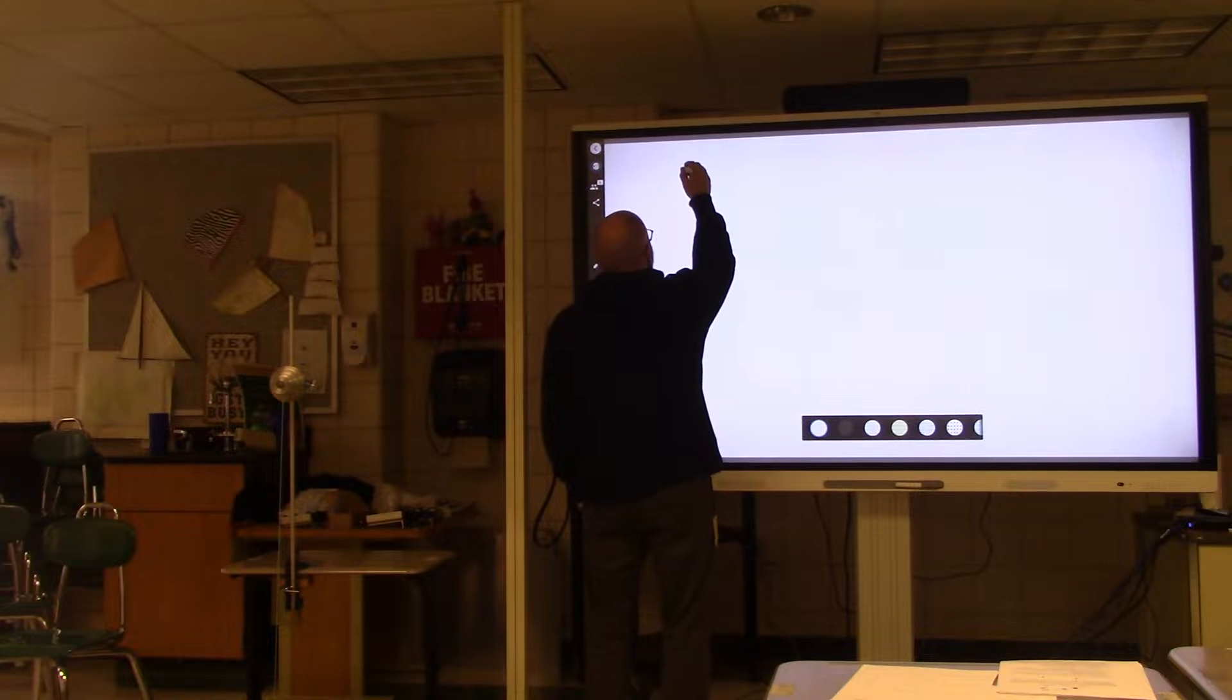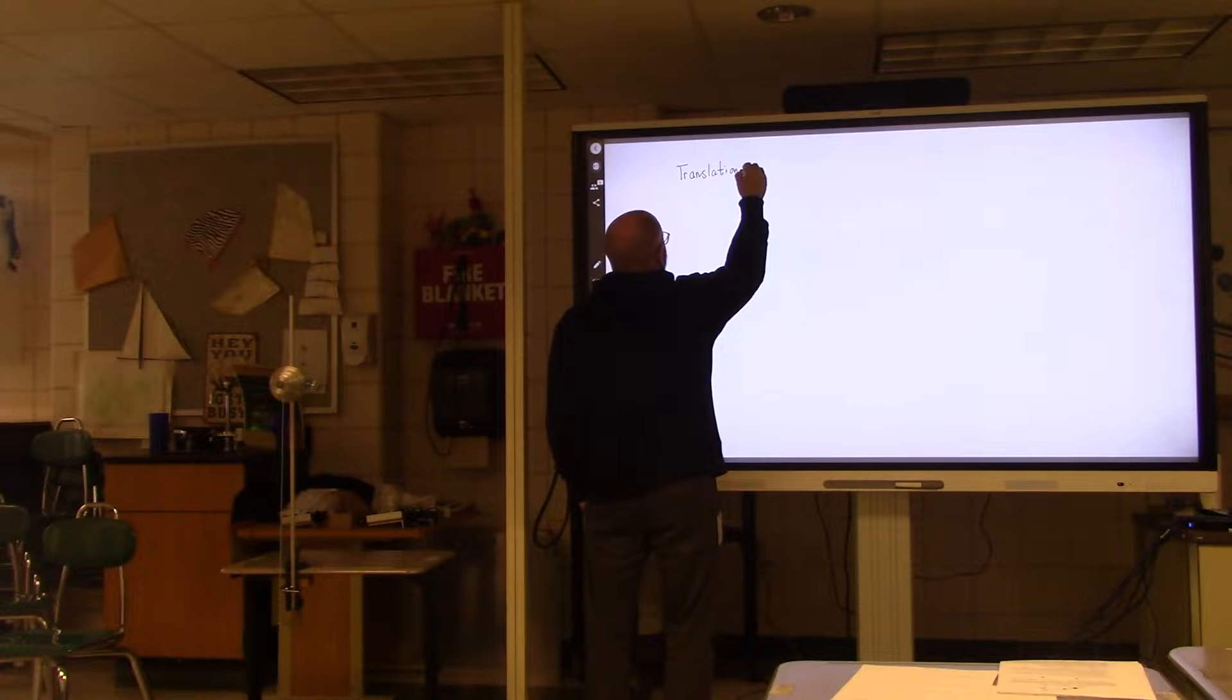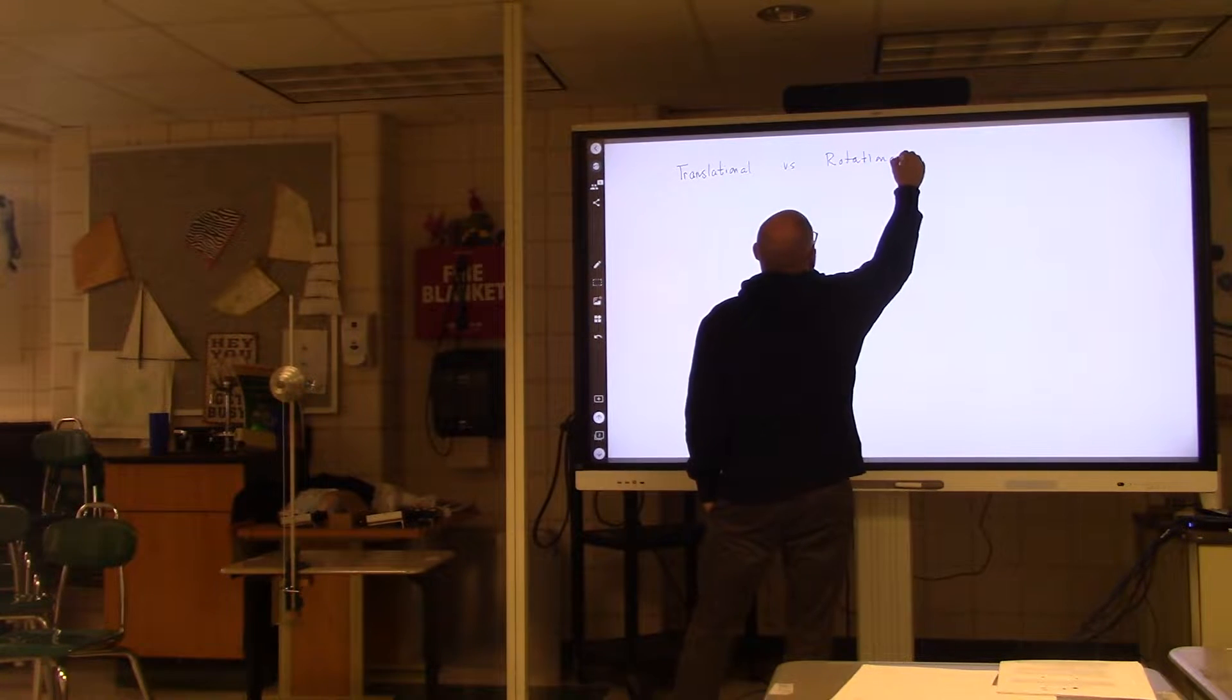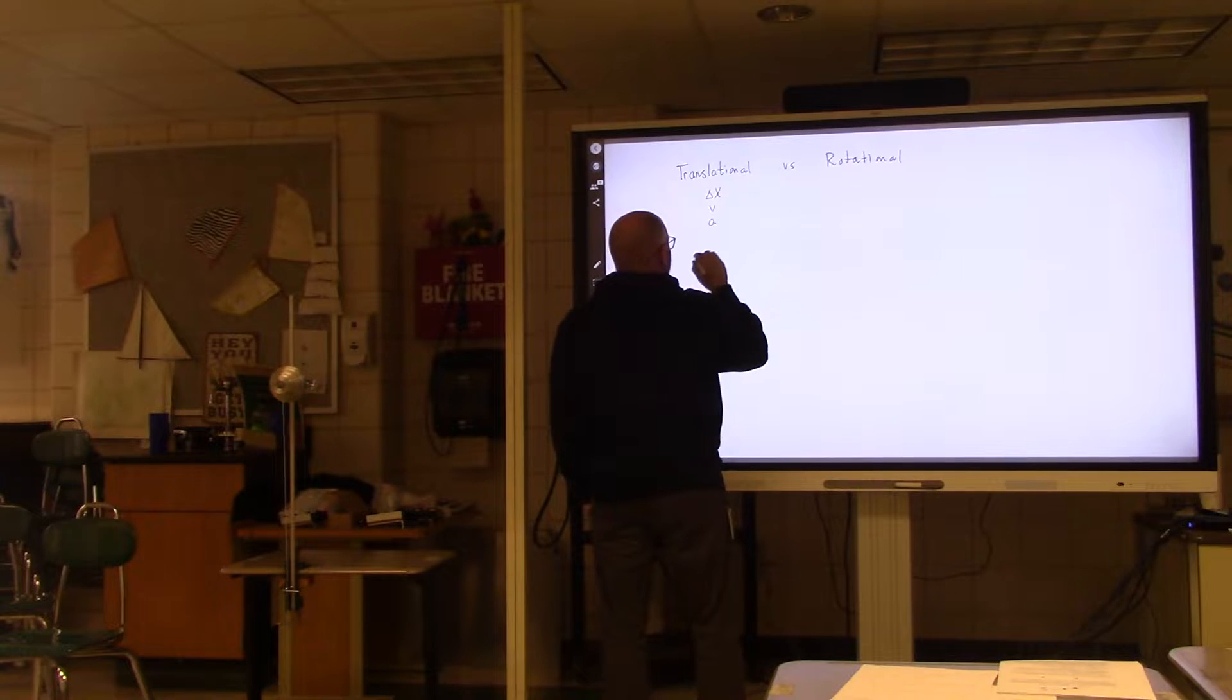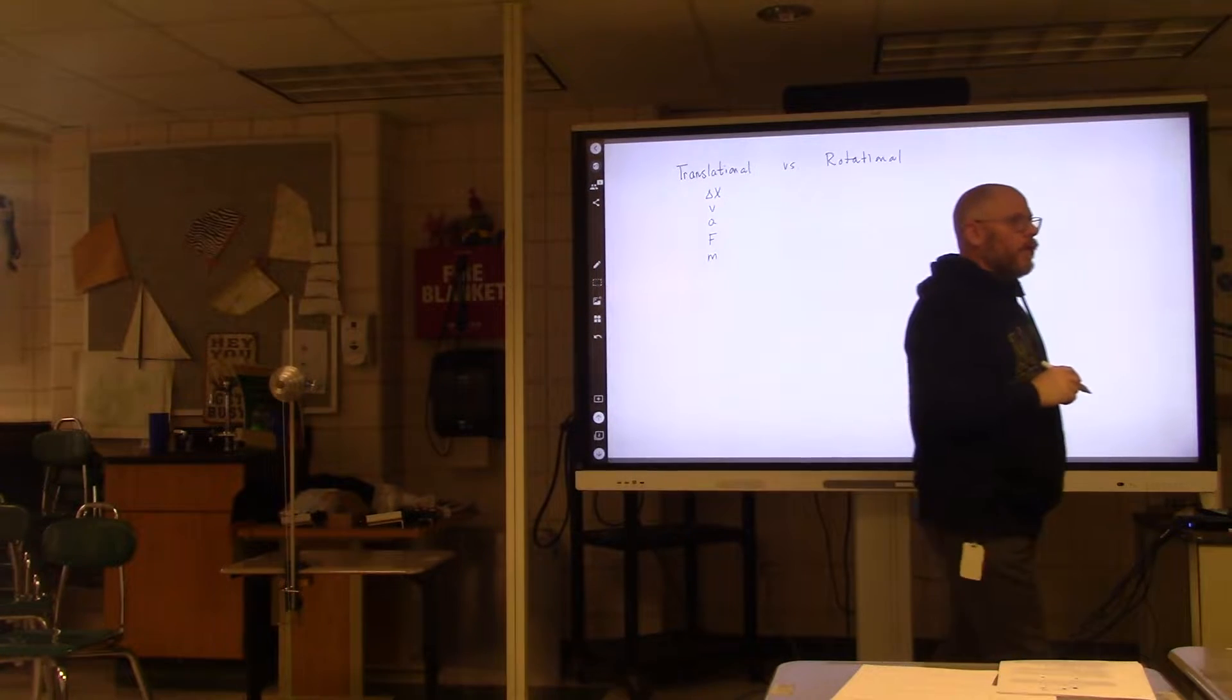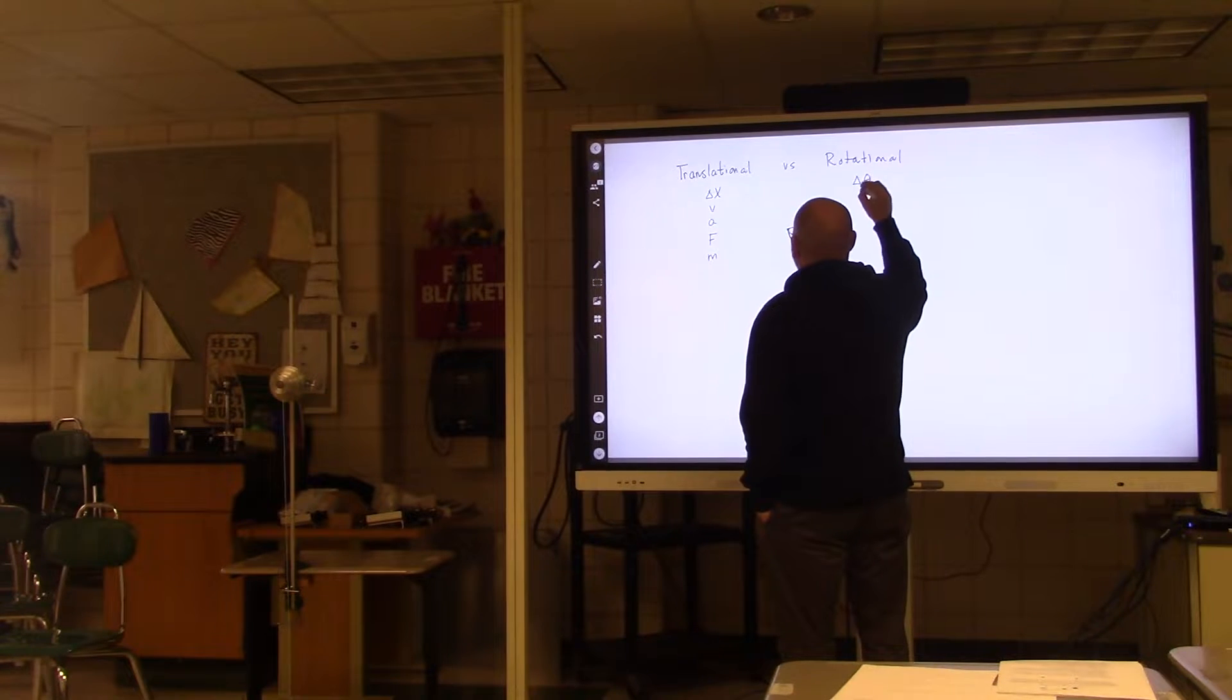When we were talking about translational versus rotational, we had our values: delta x, v, a, f, m, right? We have analogs for these. So this is the change in the angle, delta theta. This is the angular velocity omega, angular acceleration alpha.